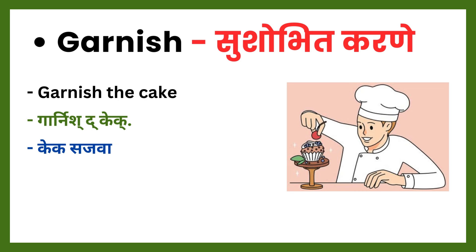Next verb: garnish. Garnish means sushobhit karne. Garnish the cake — cake sajva, cake sushobhit kara.